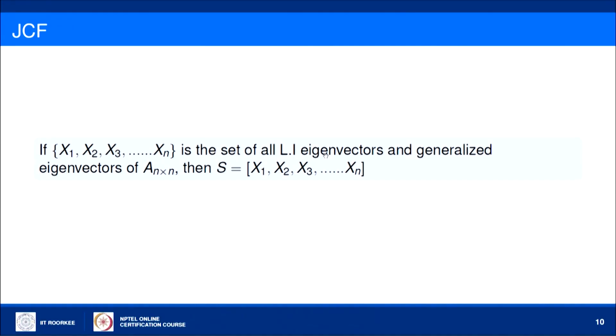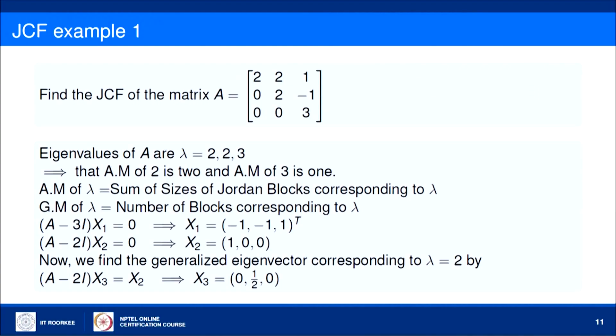Once we find the generalized eigenvectors, we have N total eigenvectors and generalized eigenvectors for an N×N matrix. These N vectors are written as columns of matrix S. So if x₁, x₂, …, x_N is the set of all linearly independent eigenvectors and generalized eigenvectors of A, then S is the matrix having these as its columns. Let us now take an example to write the Jordan canonical transformation of a given matrix.